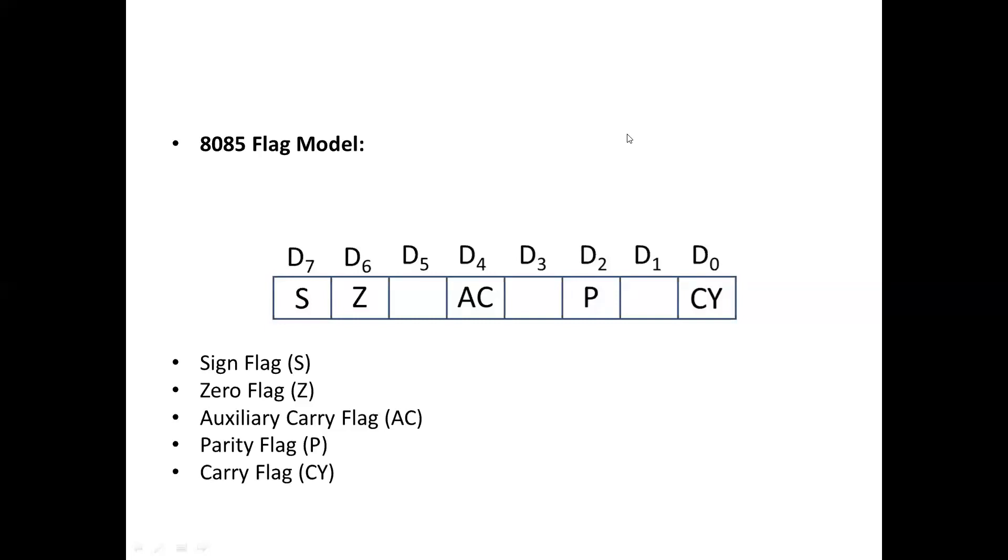Carry flag: If any arithmetic operation results in a carry, the carry flag is set to 1, otherwise it is reset to 0. If D7 generates a carry, then the carry flag is 1, otherwise the carry flag is 0. This is the total of 8085 FLAG register.